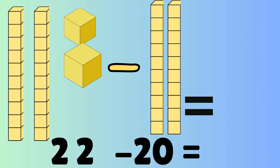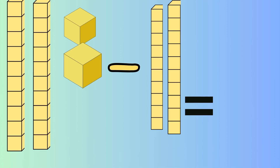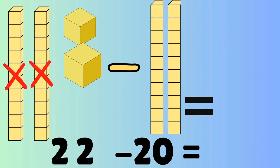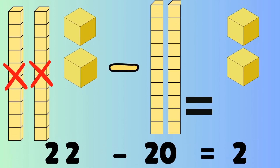Twenty-two minus twenty. You got two blocks of ten and two individual cubes and you're going to take off twenty. We marked off two of the blocks of ten. So what is left? Only two cubes. So twenty-two minus twenty is two.